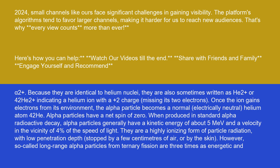Alpha particles have a net spin of zero. When produced in standard alpha radioactive decay, alpha particles generally have a kinetic energy of about 5 MeV and a velocity in the vicinity of 4% of the speed of light.